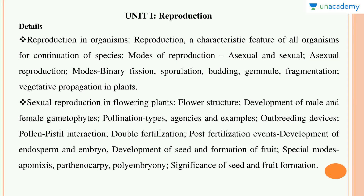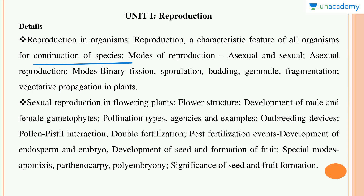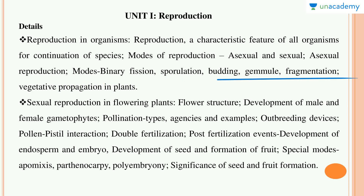In Unit 1, the Reproduction part covers characteristic features of all organisms for continuation of a species, then modes of reproduction — sexual and asexual. In asexual reproduction: binary fission, budding, fragmentation, and vegetative propagation in plants. In sexual reproduction in flowering plants: flower structure, development of male and female gametophytes.